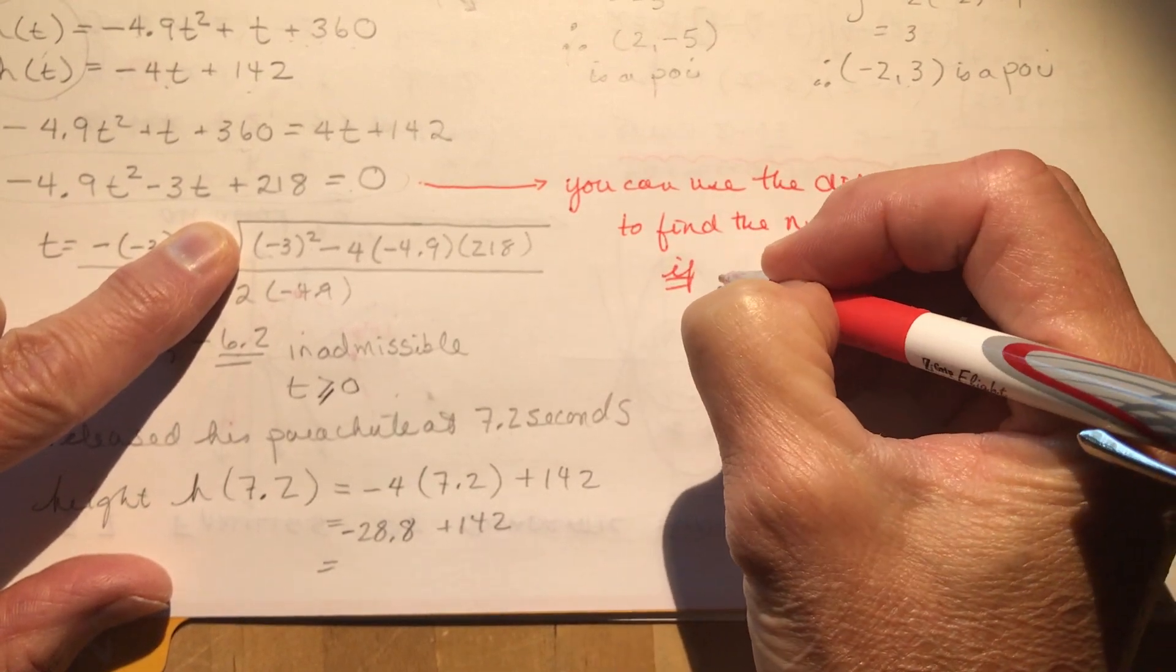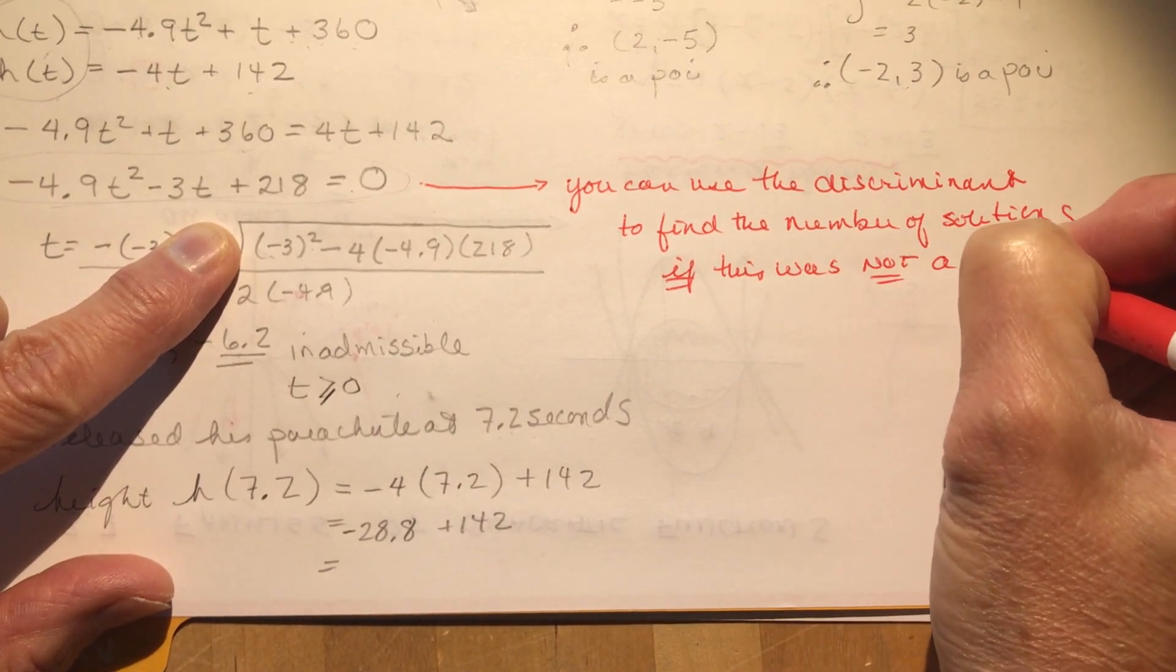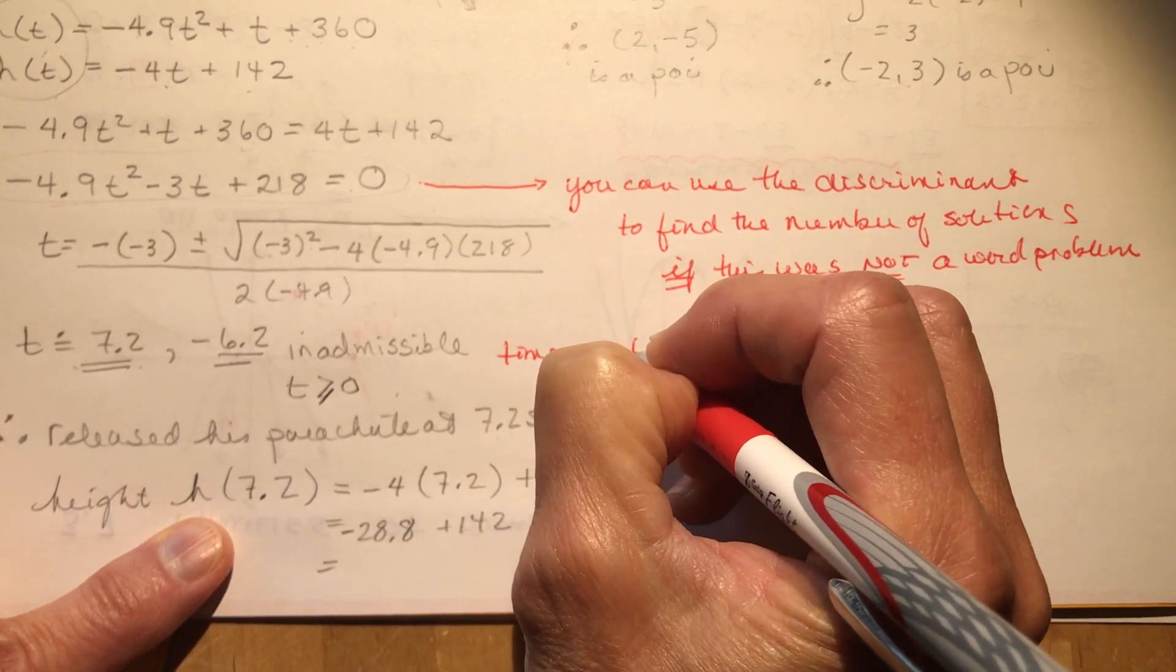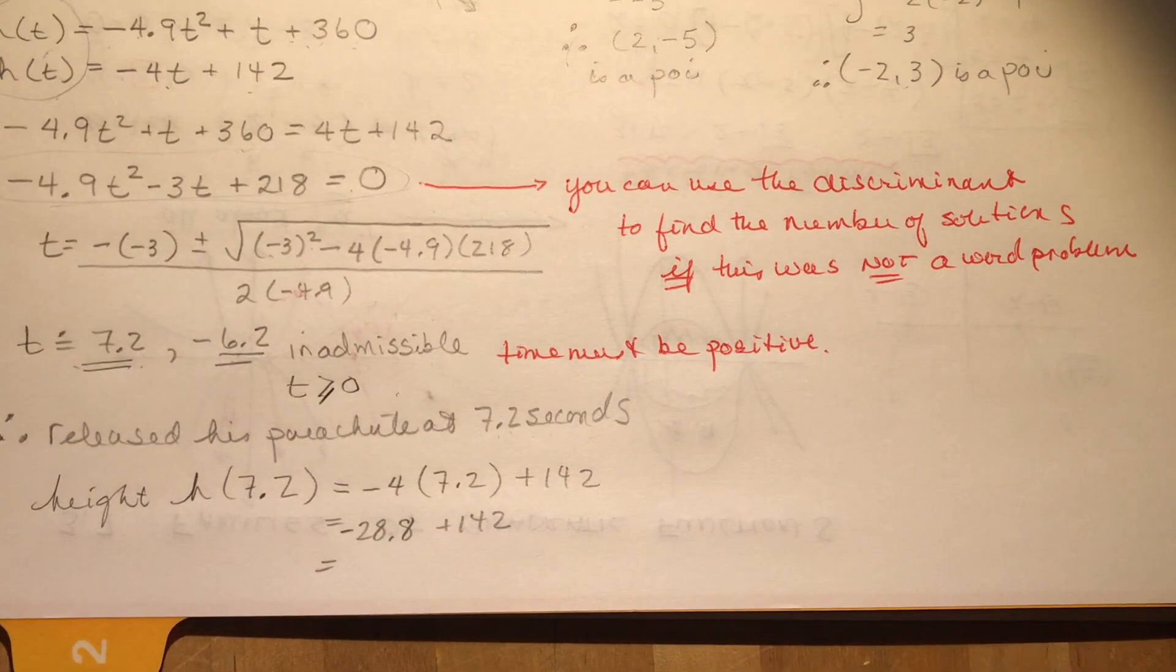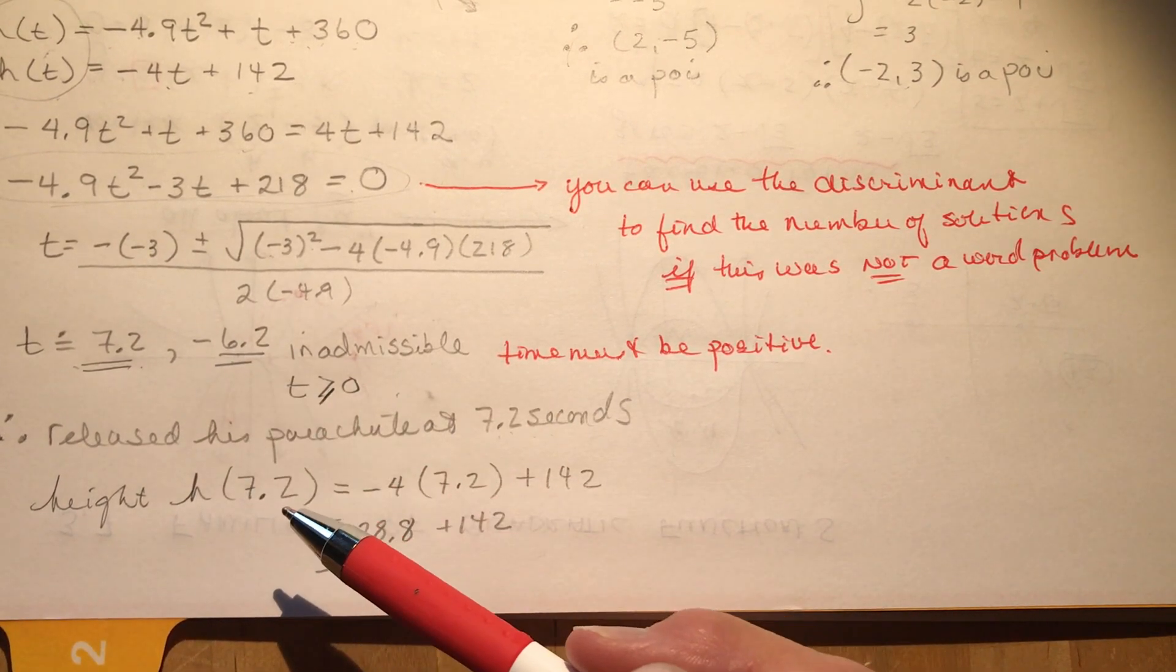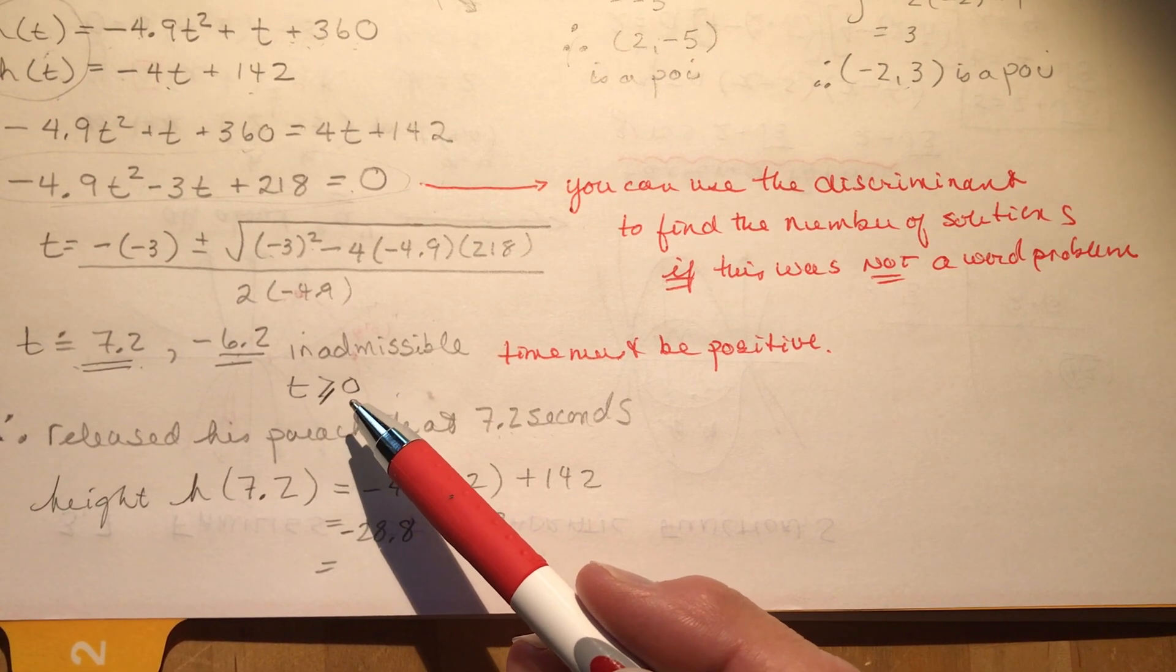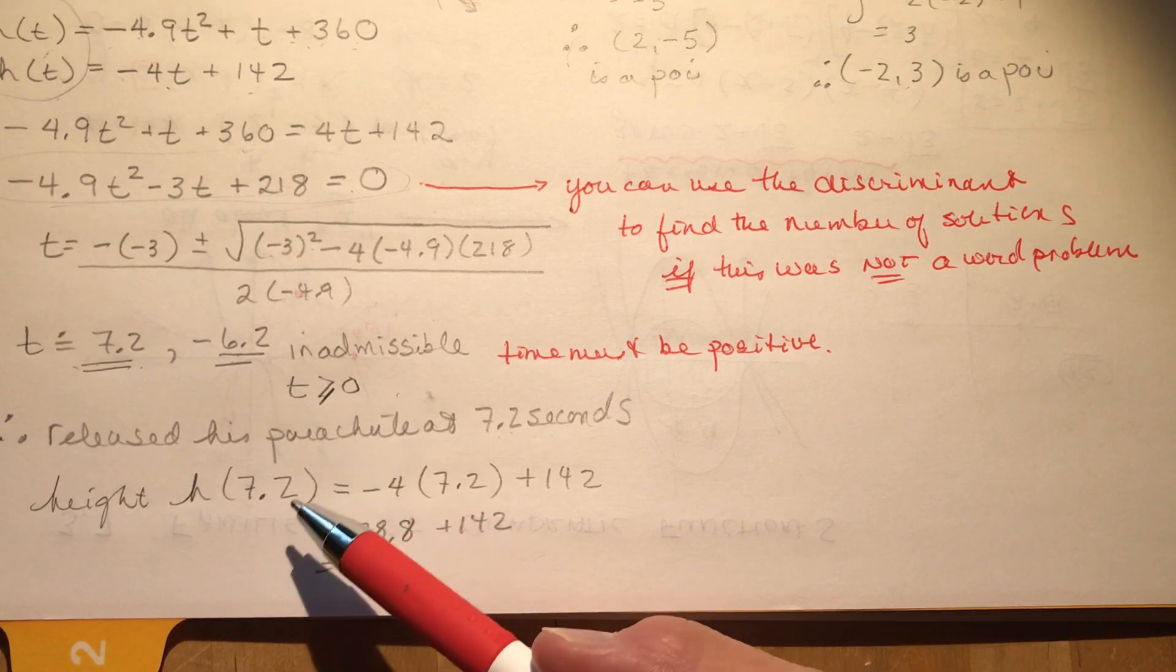If, if, if, that's a big if, because this was a word problem. If this was not a word problem. Because it is a word problem, time has to be positive. Time must be positive. So it depends on whether or not it's just a straight calculation that you're doing, or if you're working with a word problem, then you have to make sense of it. You're not going to say, oh yeah, he pulled it out 6.2 seconds before he even took off. You can't have negative time. And he couldn't have pulled the parachute before he jumped off the CN Tower. That would have been ridiculous. I guess it could have happened, but we don't talk about negative time.